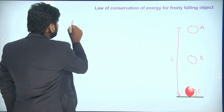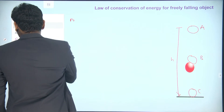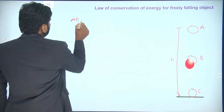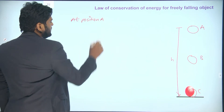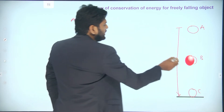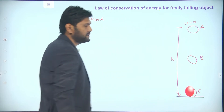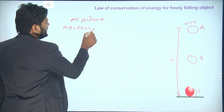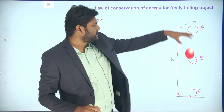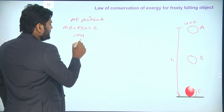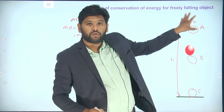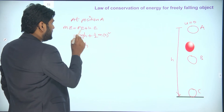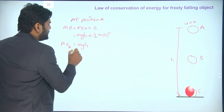At position A, the object is at height h and it is falling freely, so the initial velocity is 0. In that case, total mechanical energy equals potential energy plus kinetic energy. Since it is at height h, it possesses potential energy mgh, and since velocity is 0, kinetic energy becomes half m(0)² = 0. So finally, the mechanical energy at position A equals mgh.